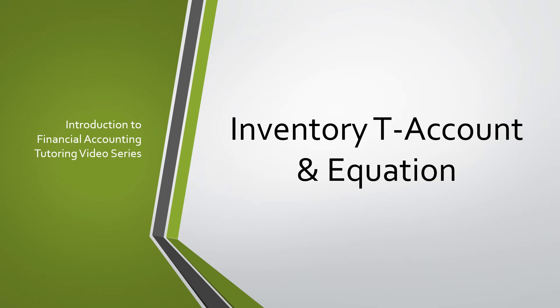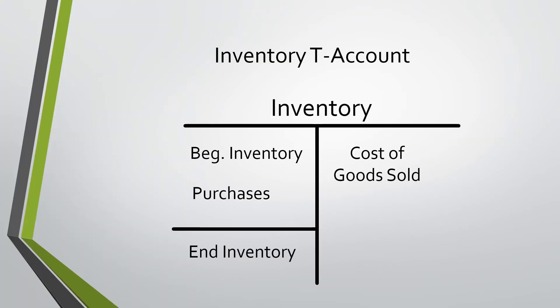Today we will be going over the inventory T-account and equation. Shown on this slide is the inventory T-account. We see that we start with beginning inventory, we add purchases, subtract cost of goods sold, and that will give us our ending inventory.